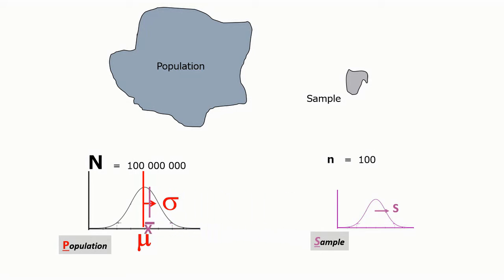So we use the mean of the sample and the standard deviation of the sample to estimate the unknown mean and standard deviation of the population.